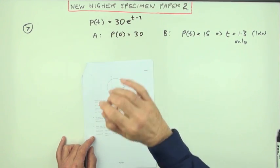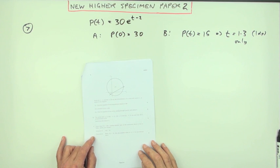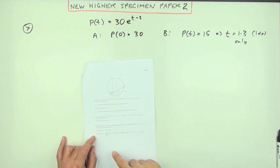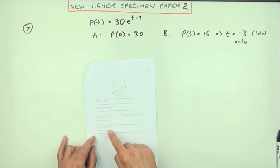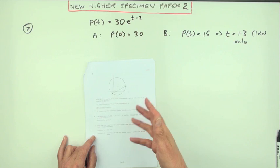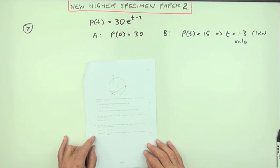So number seven then from the specimen paper for this new Higher paper two, a little sort of true-false question. This seems to be like the one used to have in the multiple choice, the multiple selection thing. You had a couple of statements you had to decide is one true or both true and so on. Only here of course you have to write it out properly and justify it.